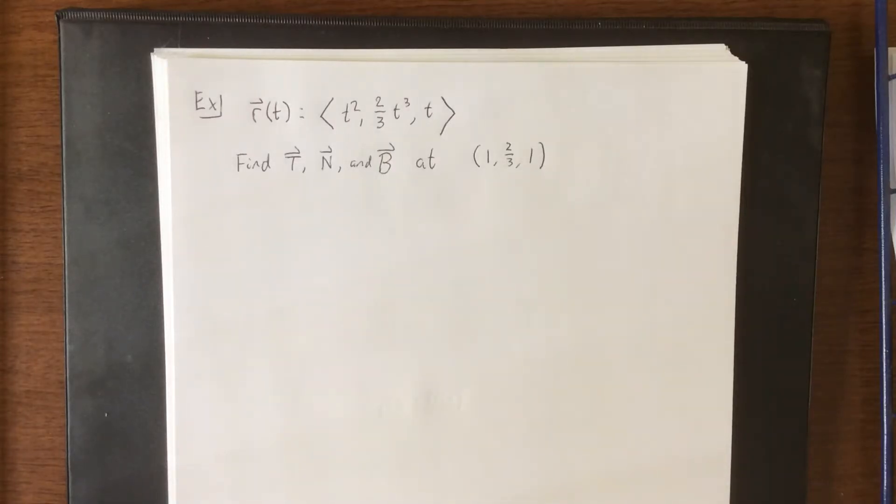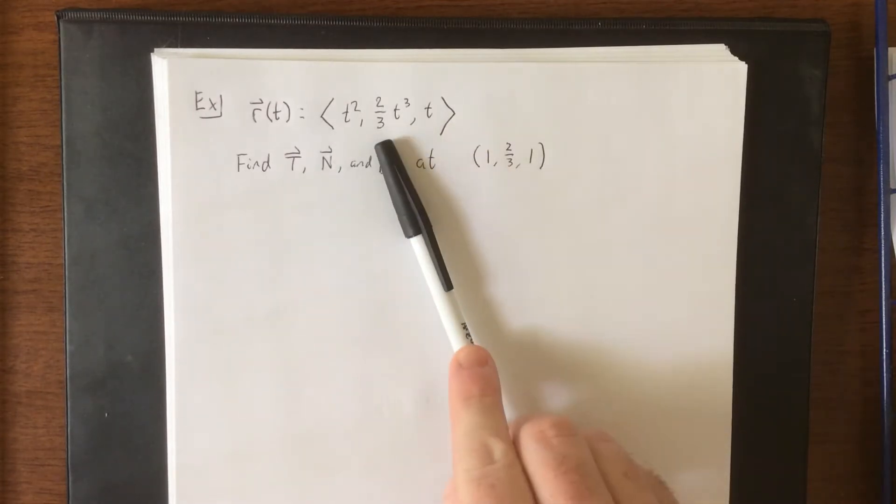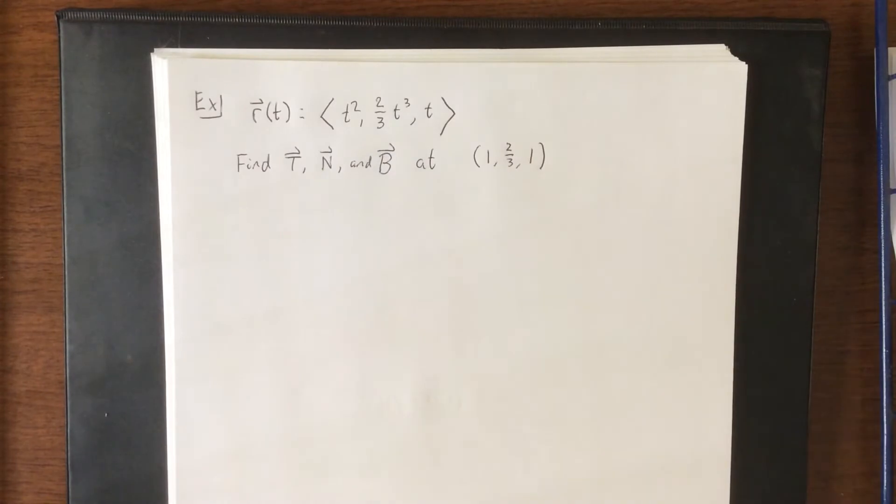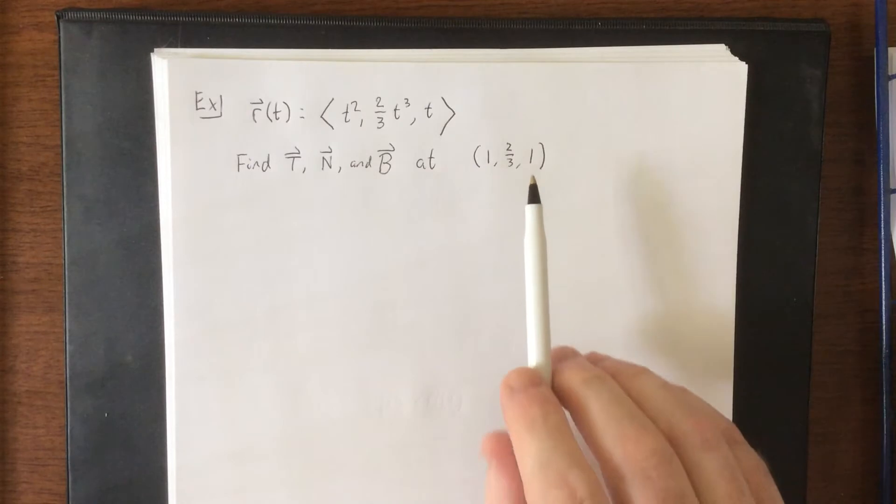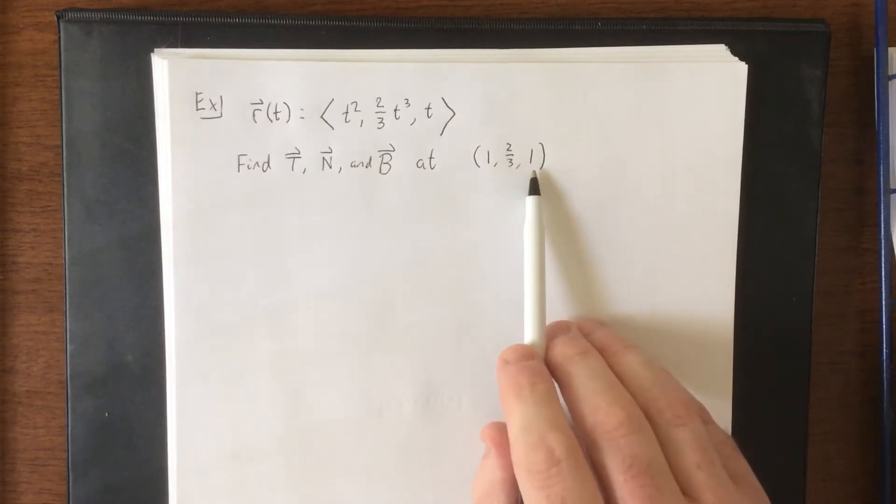So an example of the unit tangent, unit normal, and binormal vectors. We are given a space curve R of t equals t squared, two-thirds t cubed, and t. We're going to find the unit tangent vector, unit normal vector, and binormal vector at the ordered triple one, two-thirds, one.